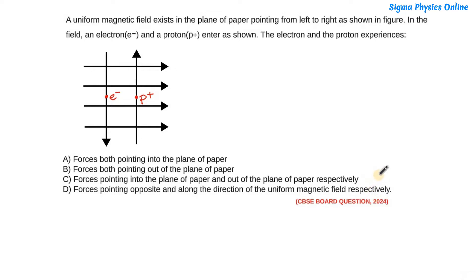So out of these four options we have to choose the correct answer. Here we have been given a magnetic field, and into this magnetic field a positively charged proton enters and a negatively charged electron enters as shown in the figure. We have to find out the force which the proton and the electron will experience.